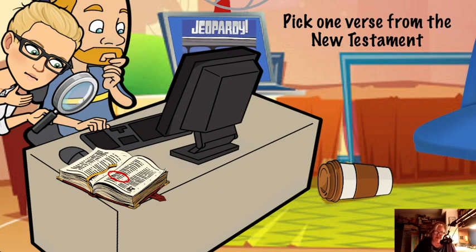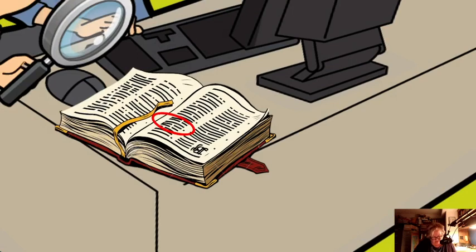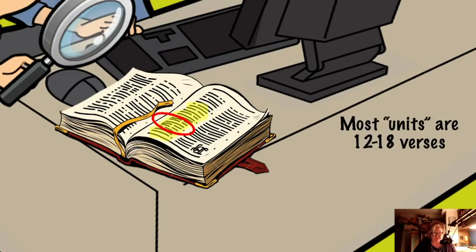Once you pick a verse from the New Testament, look at the verses that surround your passage — we're going to call that your unit. Most units are about 12 to 18 verses long; some are 10, some are longer, but they're usually about this amount of verses.